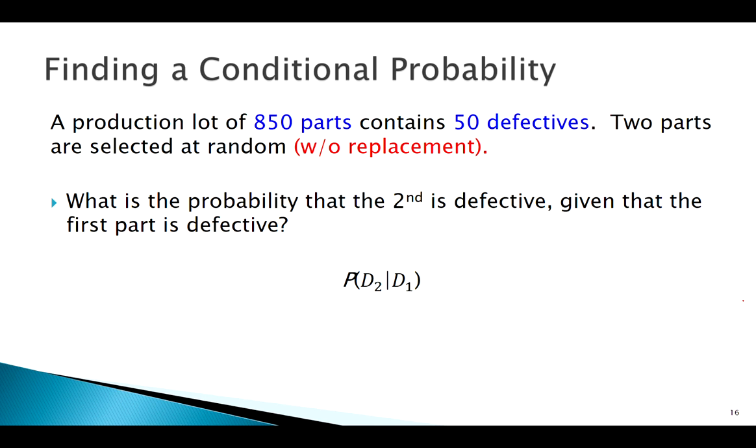I'm looking for defective on the second draw given defective was the first. It'd be easy if we just said what's the probability of drawing a defective - that would be 50 over 850. That's the probability of defective the first time, but I pulled one out of the pile.